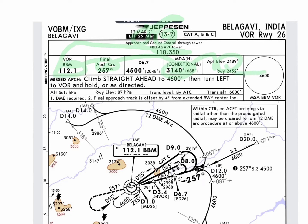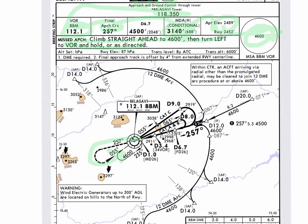Airport elevation is 2489, so 2500 is set as the airport elevation. MSA is 4600 up to 25 nautical miles around all sectors. Missed approach: climb straight ahead to 4600, then turn left to VOR and hold, or as directed. This is the missed approach path that you will verify with your FMS.